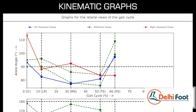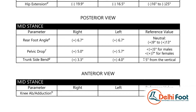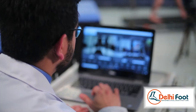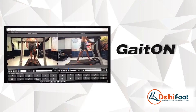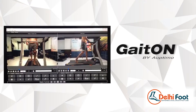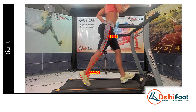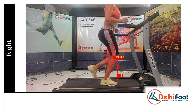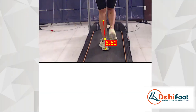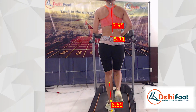Once the motion is captured, we take you through the biomechanics of your movement. Delhi Foot uses 2D motion analysis software called Gaiton, produced by Optimo. Gaiton enables us to have access to normal range of motion patterns of all the joints throughout the gait cycle. We identify abnormal or zero range of motion of a particular joint and, more importantly, which joint is compensating for it.